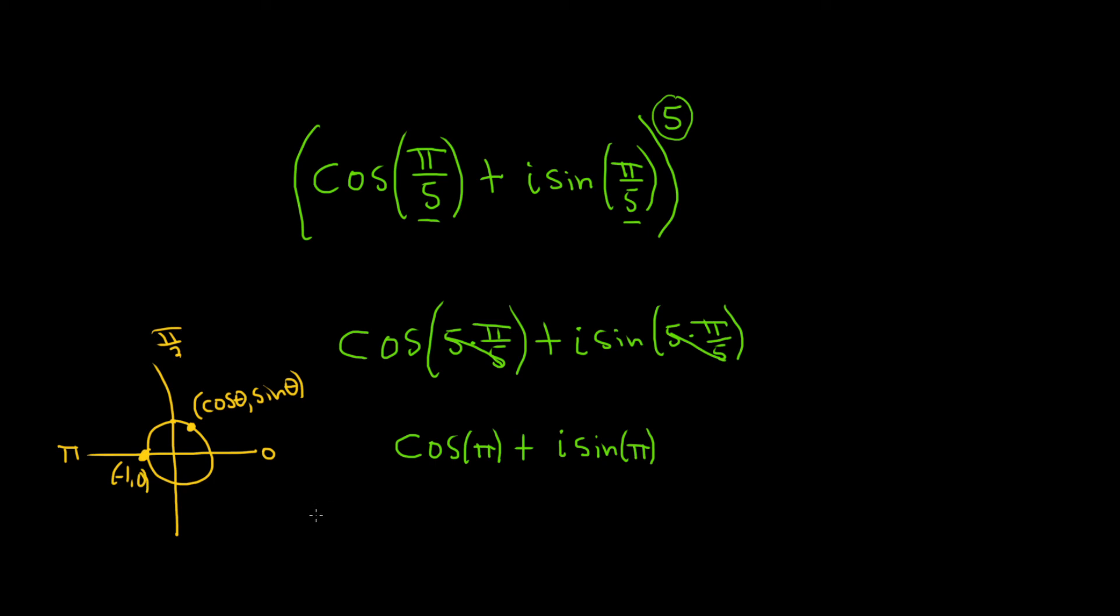So that means that the cosine of pi is equal to negative 1 because it's the x-coordinate, and since the y-coordinate is 0 and sine is equal to the y-coordinate, the sine of pi is 0. So we just get negative 1 as our final answer.